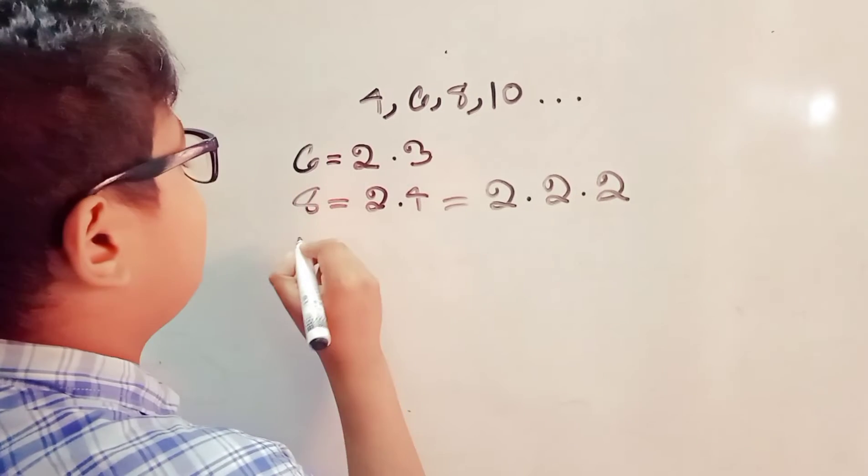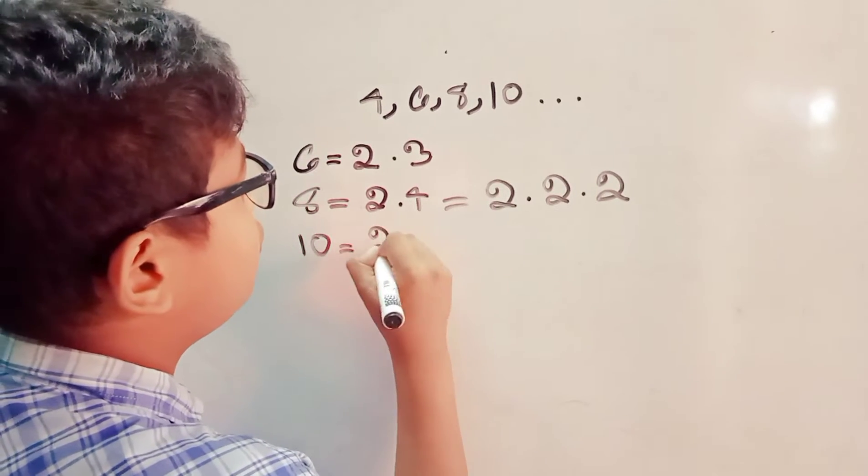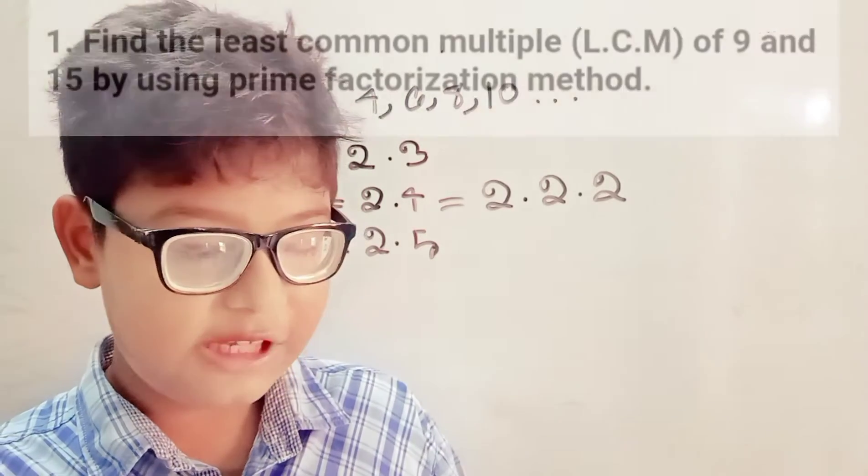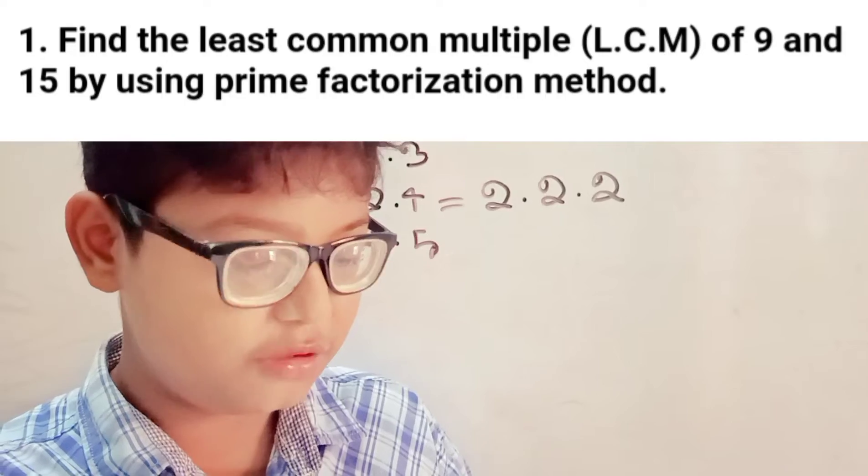Now 10 equals 2 into 5. Now find the LCM of 15 and 18 using the prime factors method.